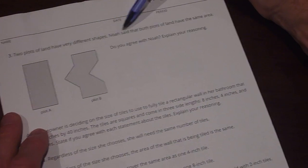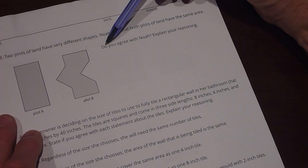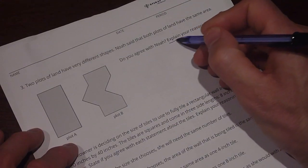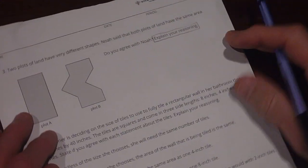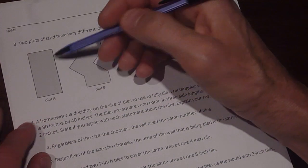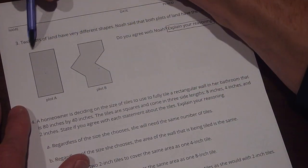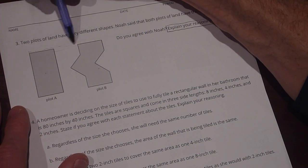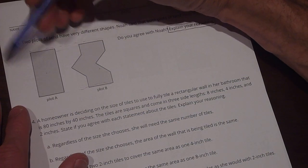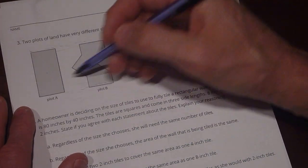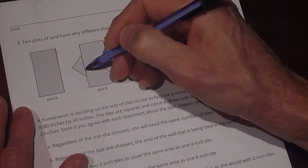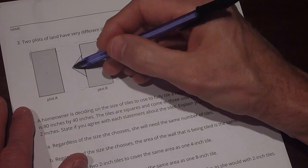Okay, moving on to page 2. Two plots of land have very different shapes. Noah said that both plots of land have the same area. Do you agree with Noah and explain your reasoning? In these problems, I just want to remind you that explaining your reasoning is probably the most important thing that you can do. It's going to help you understand it. And you're going to learn the math better. Understand the concepts. We have plot A and plot B. And we can look and see that they line up. And we can assume they're drawn to scale. So that they line up here and here. So the rectangles have the same width, excuse me, the same length. And they also have the same width when we look at them this way.